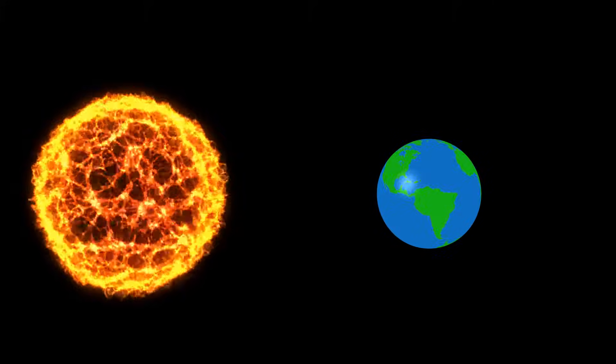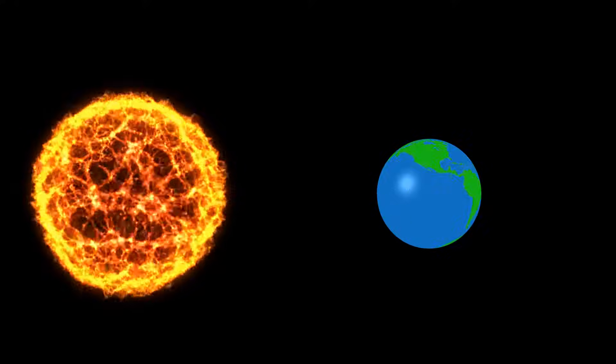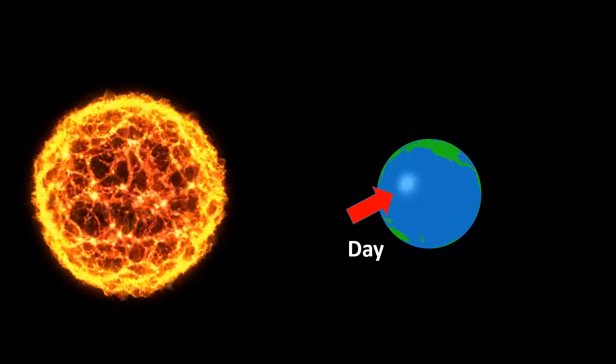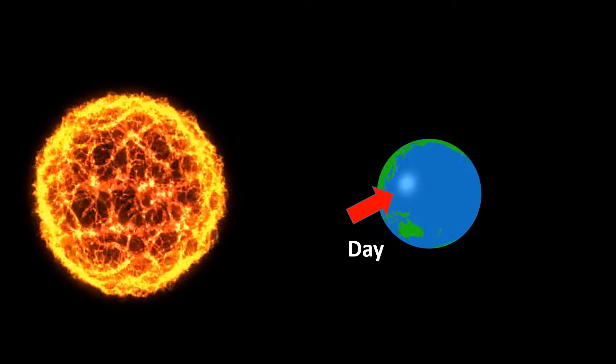Earth takes 24 hours to complete one rotation. When it rotates, the part of the Earth facing the sun will be daytime.